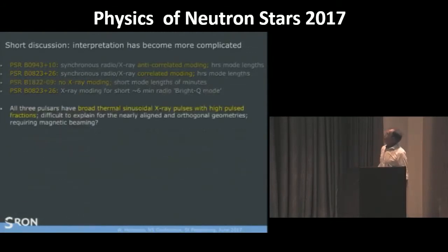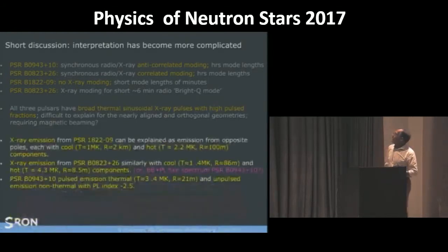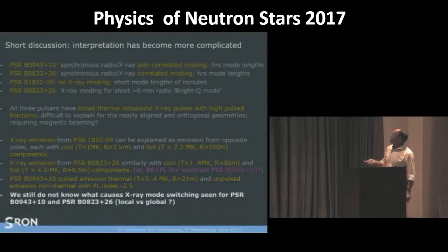All three pulsars have broad thermal sinusoidal X-ray pulses with high pulse fractions. And that's difficult to explain with nearly aligned and orthogonal geometries in both cases. It's just not a thermal isotropic emission. X-ray emission from PSR 1822 can be explained as emission from opposite poles, each with cool and hot components. 0823 similarly, but as I said, we will look again somewhat detailed whether this would be equally likely, but this is giving at the moment a consistent result. And for 0943 indeed we have their thermal and non-thermal emission.